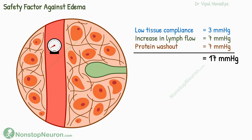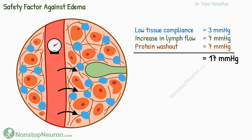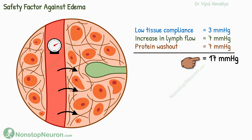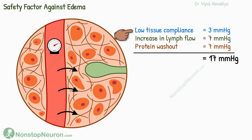All the factors collectively allow up to 17 mmHg increase in capillary pressure without causing edema. An increase in capillary pressure increases filtration, which tends to cause accumulation of fluid in the interstitium. However, the safety factors we just studied prevent this accumulation until about 17 mmHg rise in capillary pressure. In this 17 mmHg safety margin, 3 mmHg comes from the low compliance of the interstitium, 7 mmHg comes from the increase in lymph flow, and the remaining 7 mmHg comes from the washdown of proteins. In summary, the factors preventing edema in a normal healthy person are low compliance of the interstitium, an increase in lymph flow, and washdown of interstitial proteins with increase in filtration.